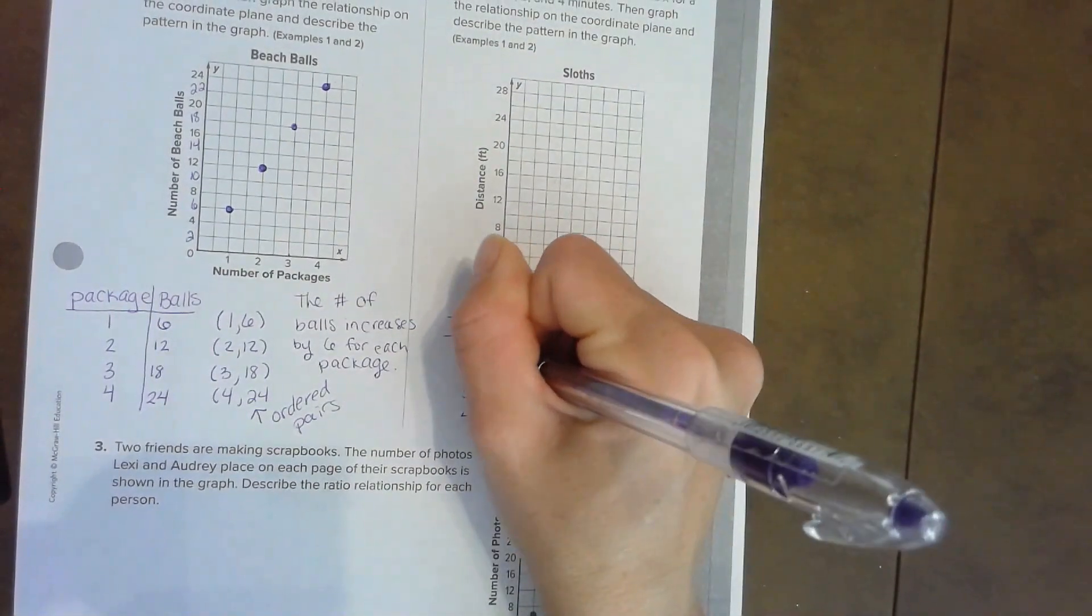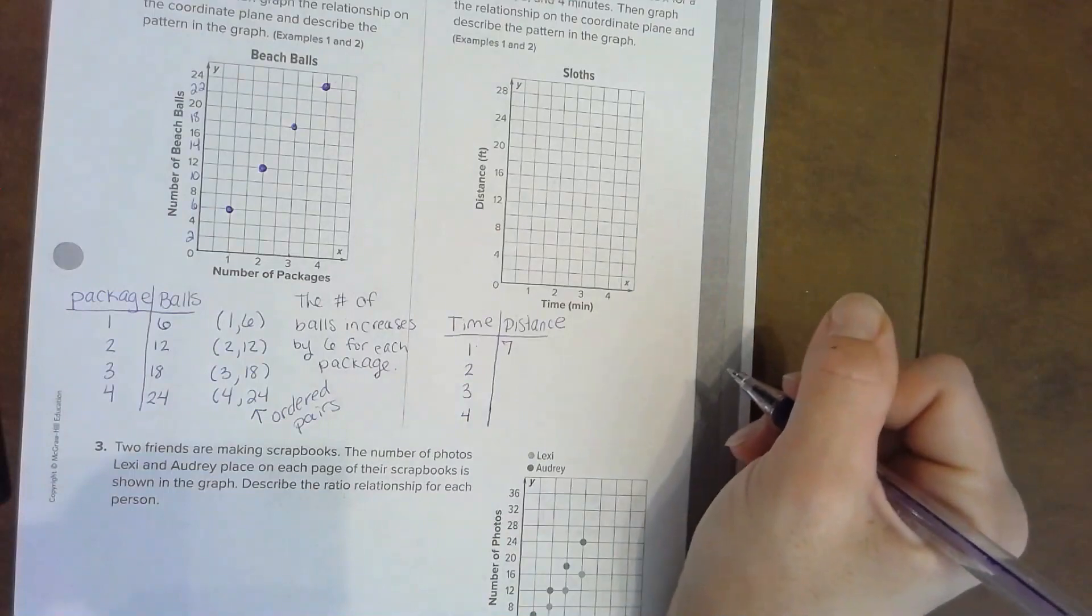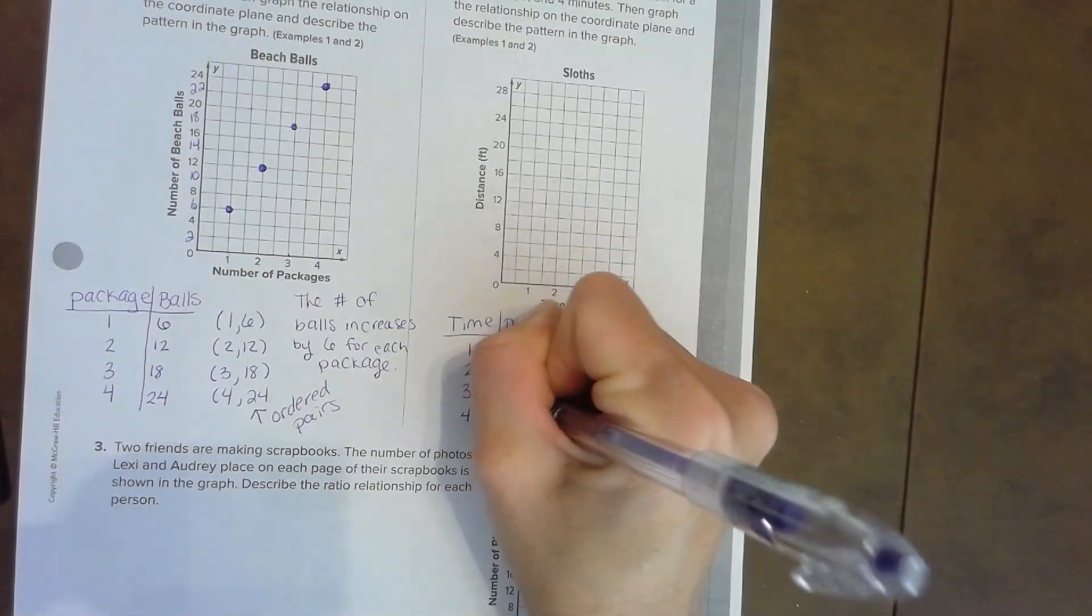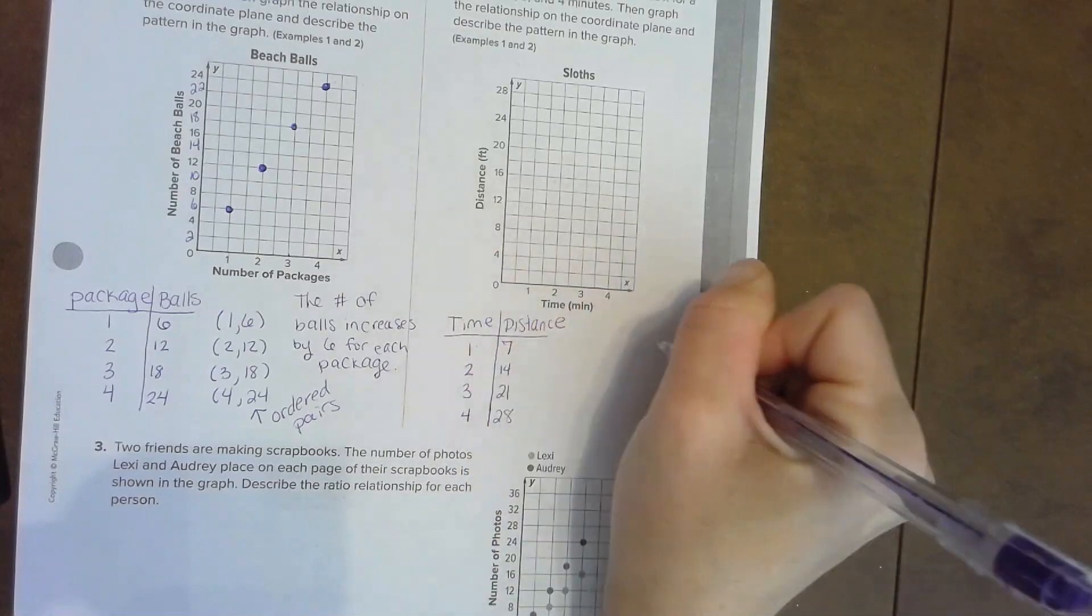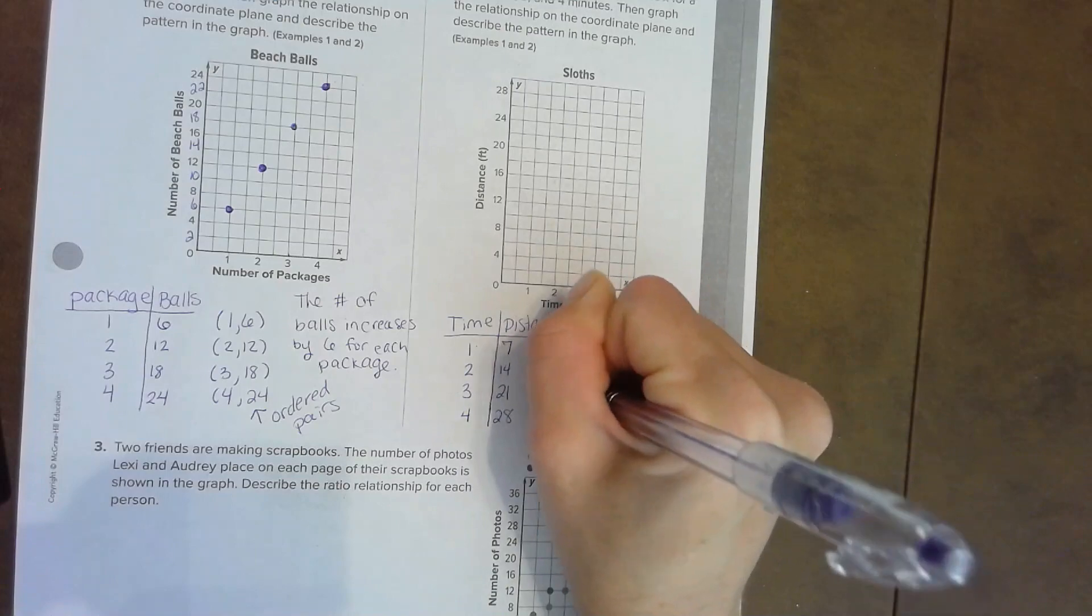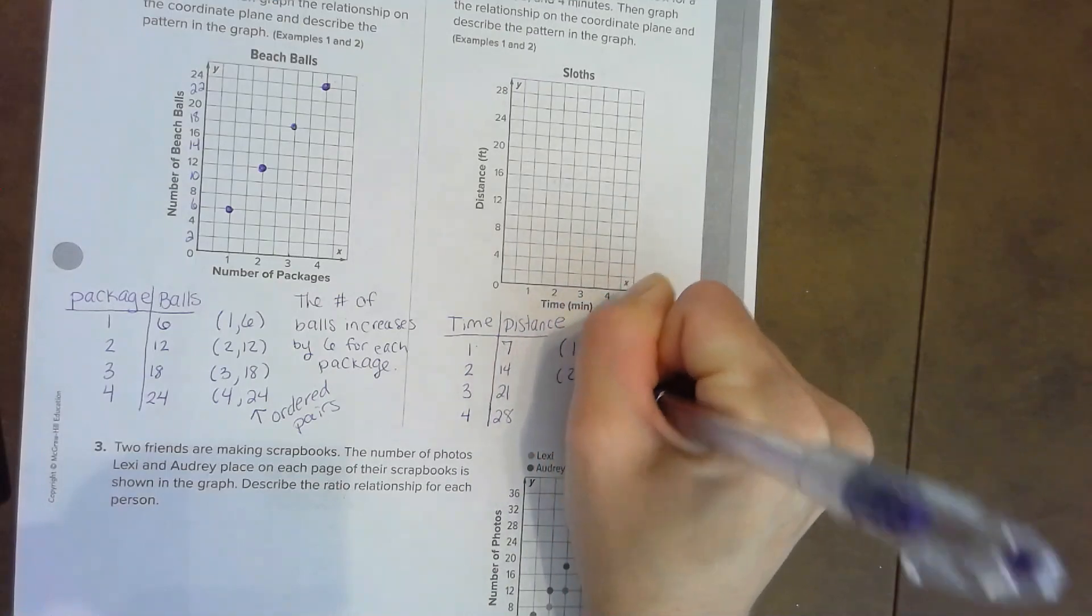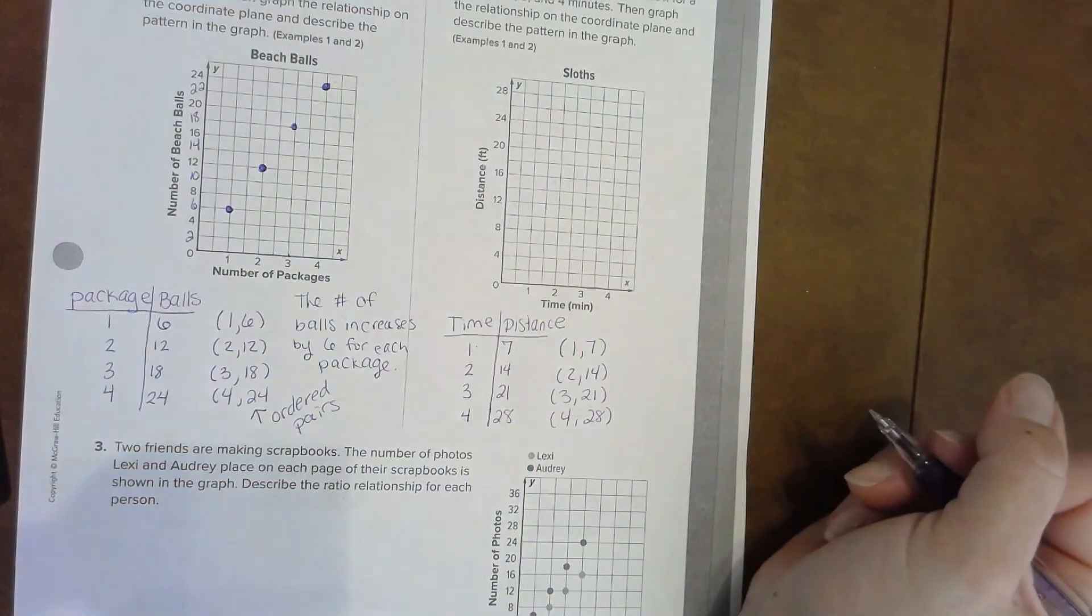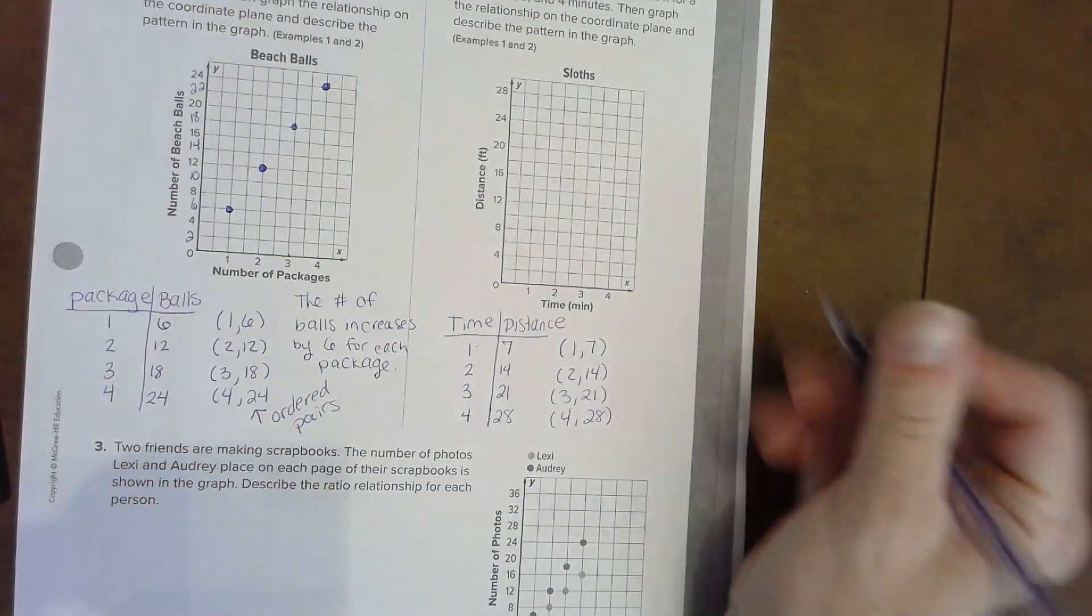Now I count by seven: seven, fourteen, twenty-one, twenty-eight. Let's do our ordered pairs. Parentheses one comma seven, two comma fourteen, three comma twenty-one, four comma twenty-eight.